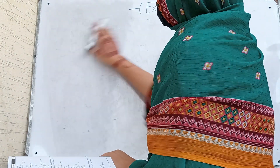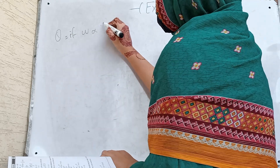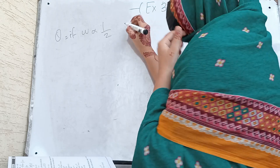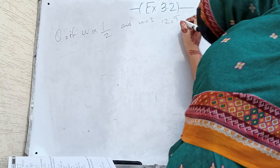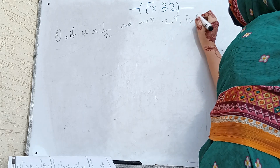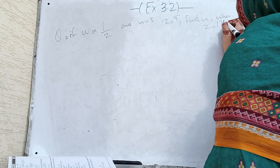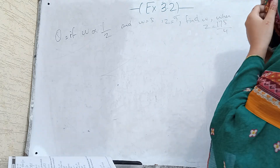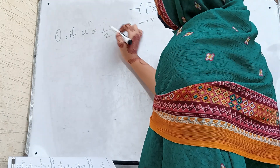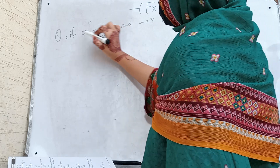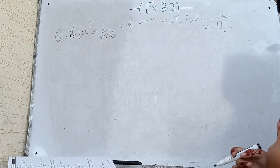If w is inversely proportional to z and w is equal to 5, z is equal to 7, find w when z is equal to 175 by 4. In inverse variation, if w increases then z decreases, and when z increases then w decreases — this is called inverse variation.